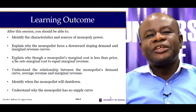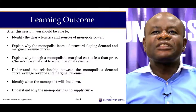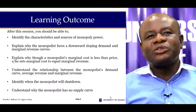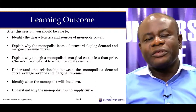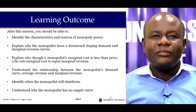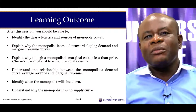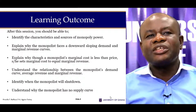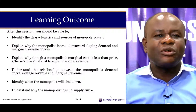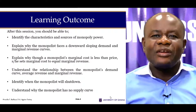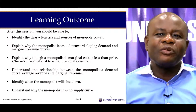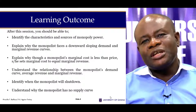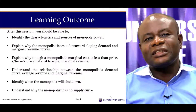By the end of the session, you should be able to identify the characteristics and sources of monopoly power, explain why the monopolist's demand curve is downward sloping, explain why the monopolist's marginal cost is less than the price — since marginal cost equals marginal revenue — and understand how to derive the monopolist's supply curve, or rather, understand why the monopolist has no supply curve.